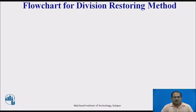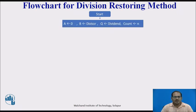Let us see the flowchart for division using the restoring method. Start and initialize the accumulator register A with zeros, the B register with the divisor value, the Q register with the dividend value, and the count as the number of steps.